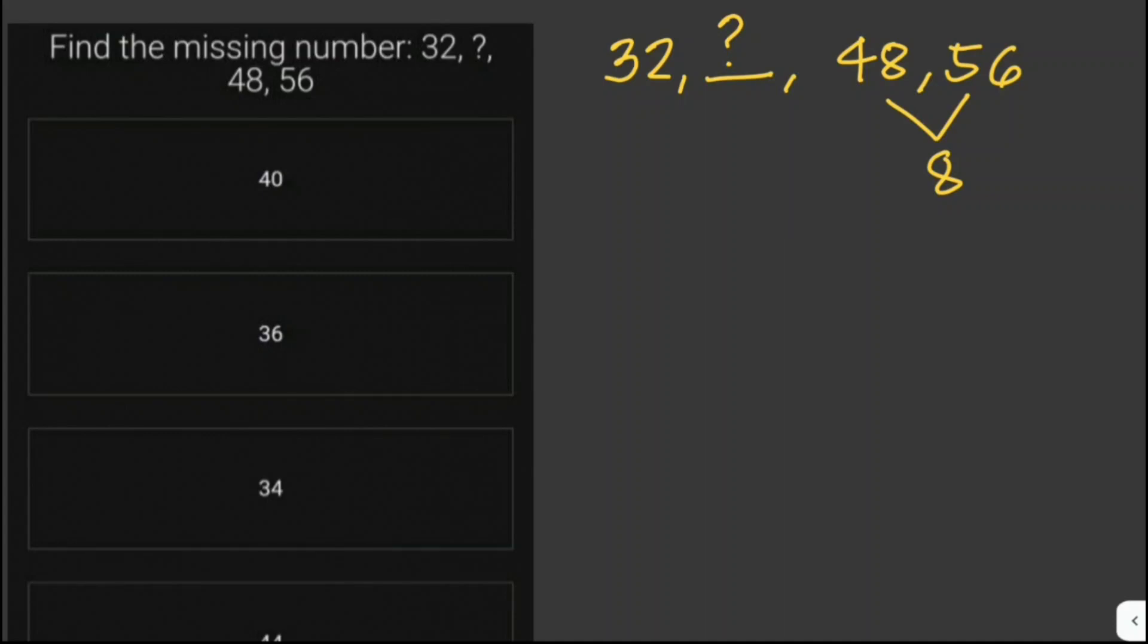There are two ways to solve this. We can just add the common difference to the previous number. In this case, the first number, which is 32, then we get 40. Therefore, the second number is just 40.